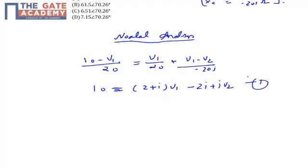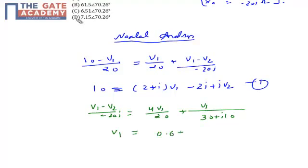Now let's apply the nodal at node V2. Sum of incoming current is equal to sum of the outgoing current. (V1 minus V2) by minus 20j which will be equal to 4V1 by 20 plus V1 by (30 plus j10). Let's solve it. By solving this equation I can get V1 will be equal to (0.6 plus 0.8j) upon (j minus 4) times V2. This is equation 2.